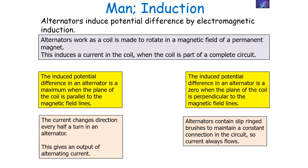To summarise alternators: they induce potential difference by electromagnetic induction, working as a coil is made to rotate in the magnetic field of a permanent magnet. This induces a current in the coil when it's part of a complete circuit. The induced potential difference is a maximum when the plane of the coil is parallel to the magnetic field lines, and zero when perpendicular. The current changes direction every half a turn, giving an output of alternating current. Alternators contain slip ring brushes to maintain a constant connection in the circuit.